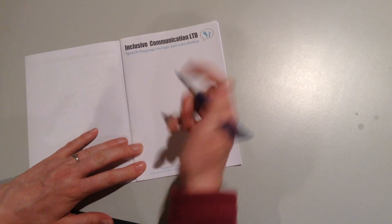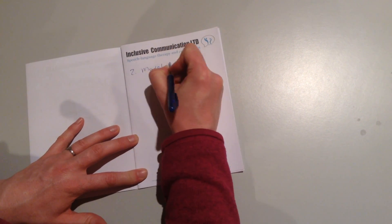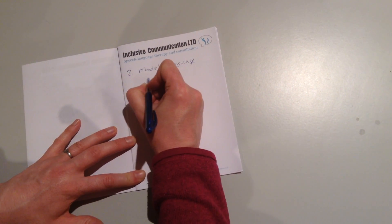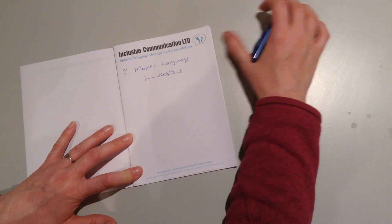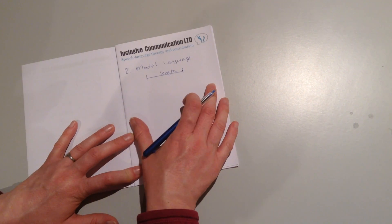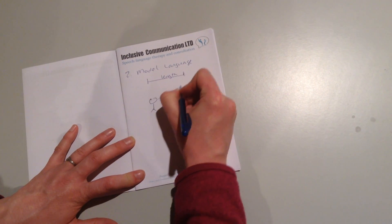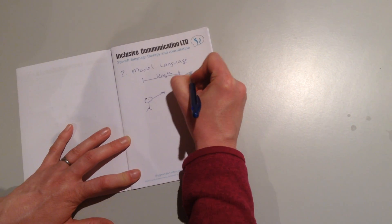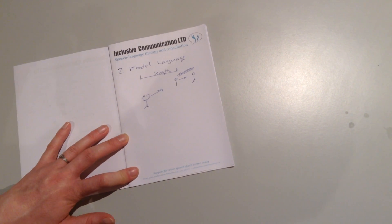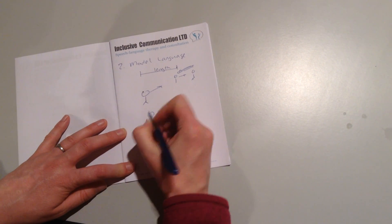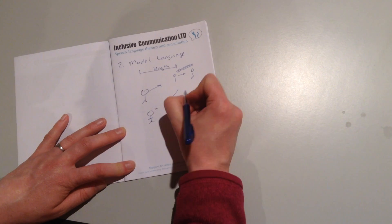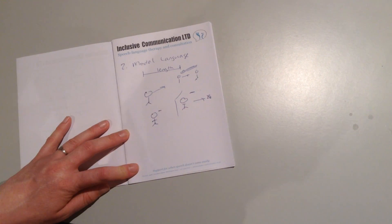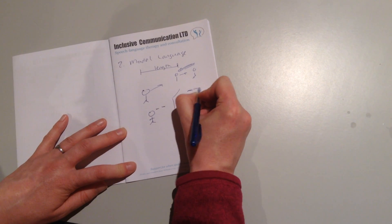The second thing we can do is make sure we model language at the same length they currently are using. With typical language learners, you're always modeling language a little bit longer, a little more advanced. But if a kid's having a hard time processing it, if we make the language too long, they might see us saying something but if what we're saying is so long they can't imitate it, they get stuck. So instead, when our little language learner is watching us do things and getting results, if they tend to talk in one word, we'll use one, maybe two words. If they're talking in two words, we'll do two, maybe three words.